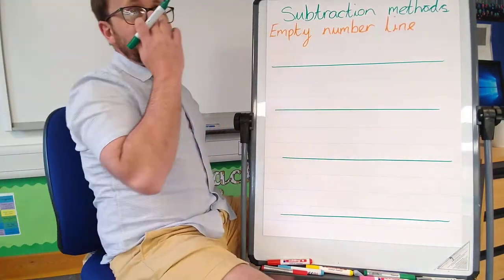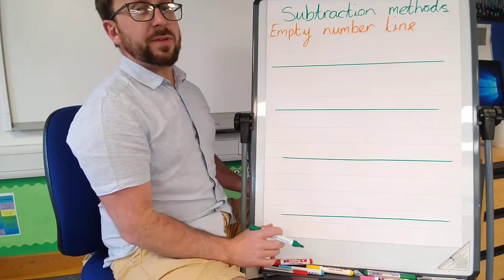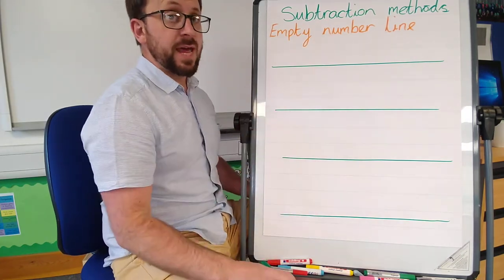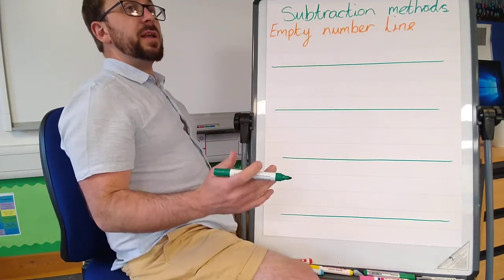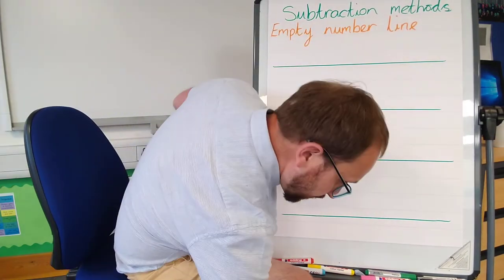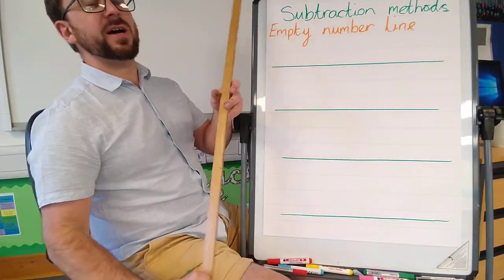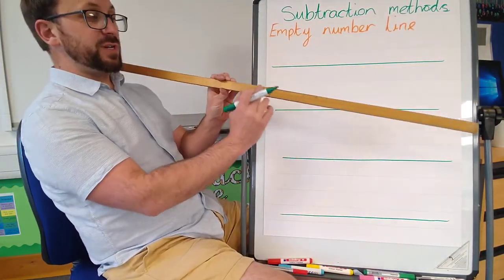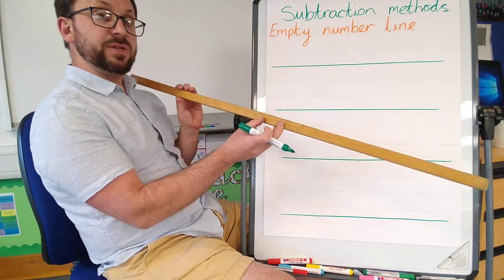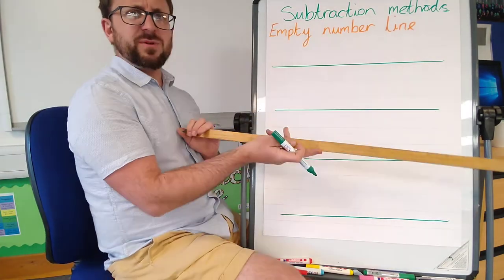Okay, last video for maths right now. We're going to be doing another subtraction method using an empty number line. Now like I said last time, some children will prefer to have a number line with numbers on it, like a ruler, or you can pre-write the numbers on them. You can download them on Google or the internet somewhere if you want them.